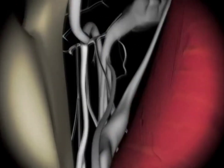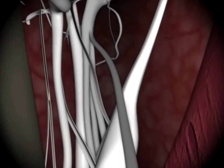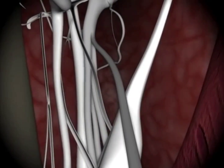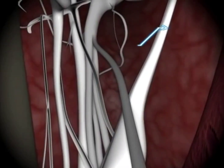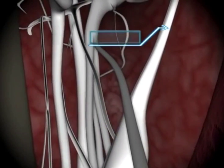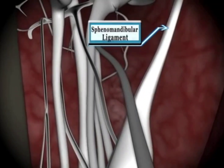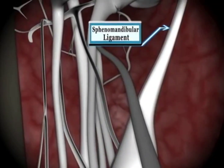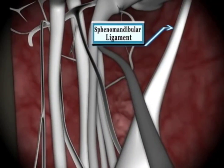Moving further in, we approach the sphenomandibular ligament, which should be to our right, or medial. We don't want to be lateral to the ligament, which could prevent diffusion of the anesthetic into our target, the inferior alveolar nerve.